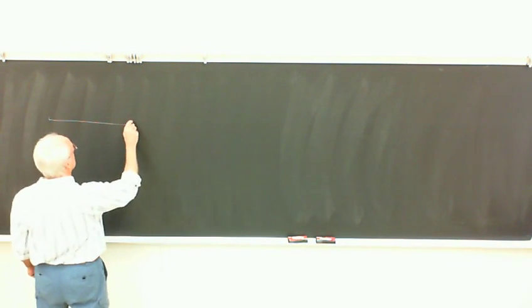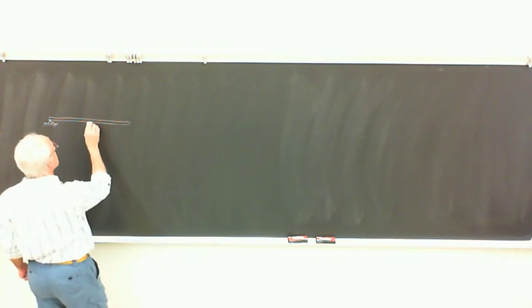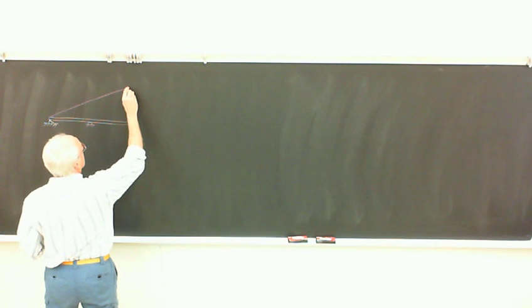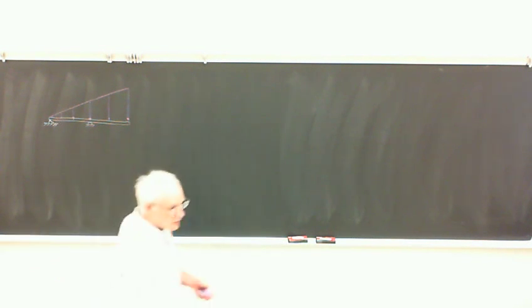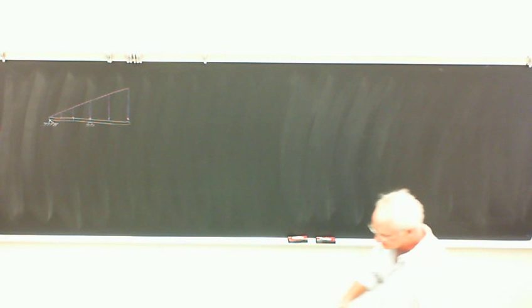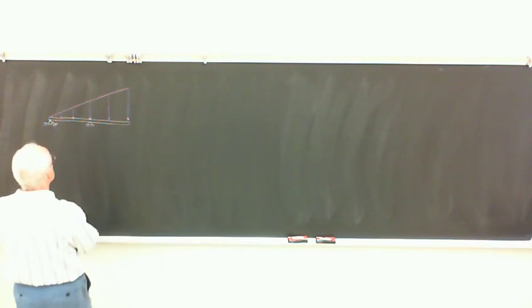We're rolling. I believe it left you with a problem. Remember we were using this method of virtual work and we had a beam set up, supported like that, with a distributed load. And I asked you to look using virtual work to come up with the support - just the support at B, which was the roller support there.